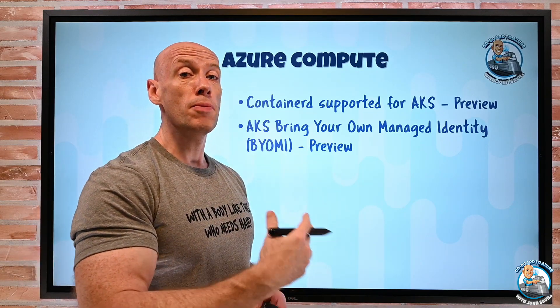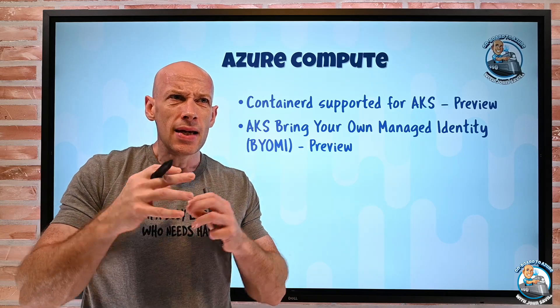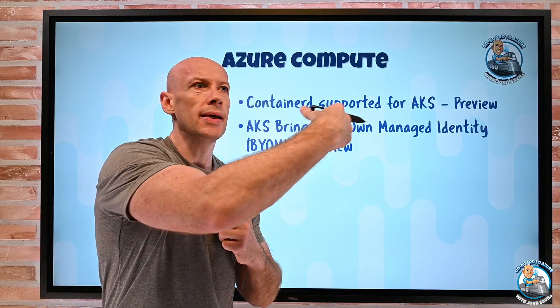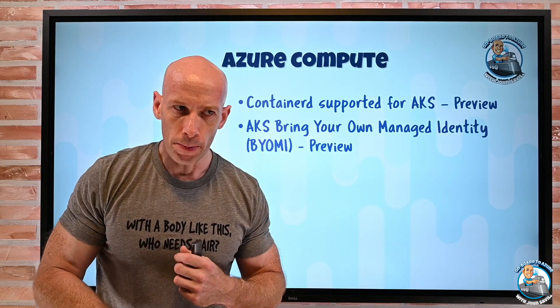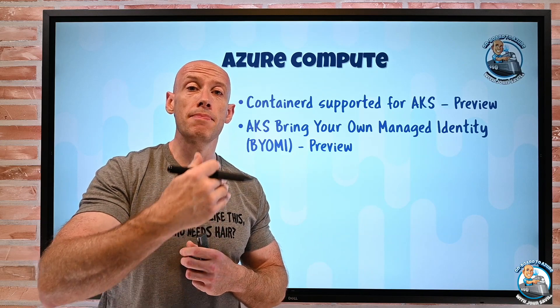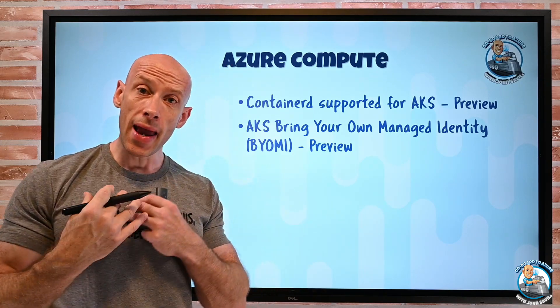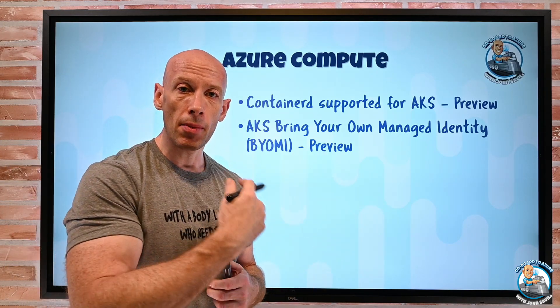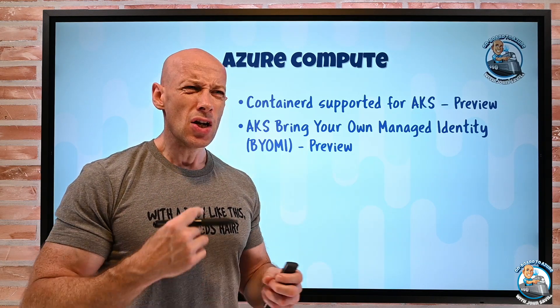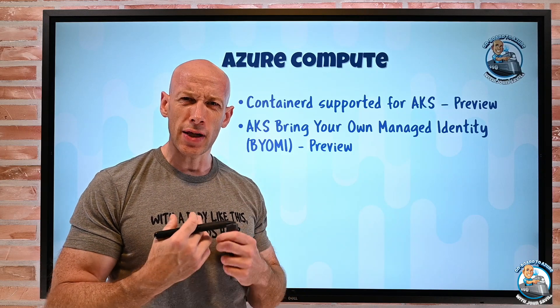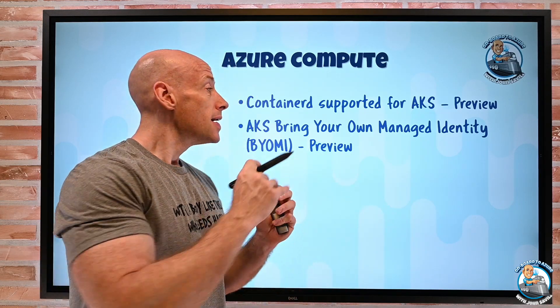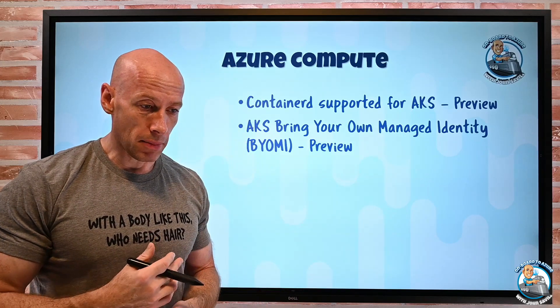For the Azure Kubernetes service, I can now bring my own managed identity. So with AKS, it has to have permission to Azure to go and create load balancers for example. And so it uses either a service principal or a system assigned managed identity. Well now, I can actually do a user assigned, I can bring my own managed identity to my Kubernetes cluster. So it gives me a bit more flexibility. I can create the managed identity in advance, give it whatever permissions it needs, and then use it when I go and spin up my AKS.